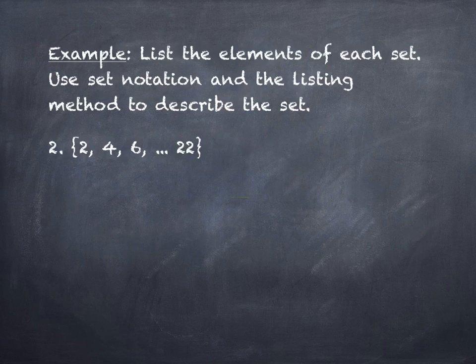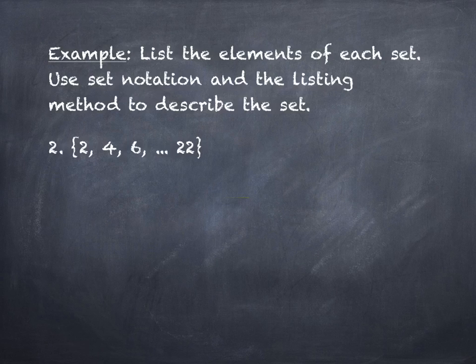Let's try another one. Same directions — we're asked to do the listing method and the set notation method. The description is given a little differently; we don't have a verbal description, just some numbers listed. But this is not quite the listing method, is it? What's wrong with it actually being the listing method? It has the ellipses — the three dots — in the middle. So let's do them in reverse order. This is A, and this is B, the listing method. We'll do part B first.